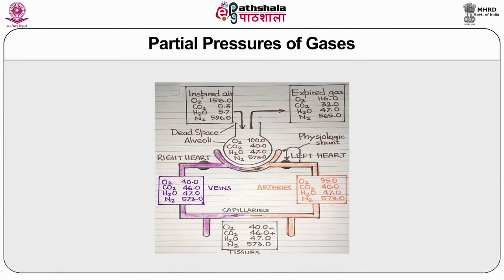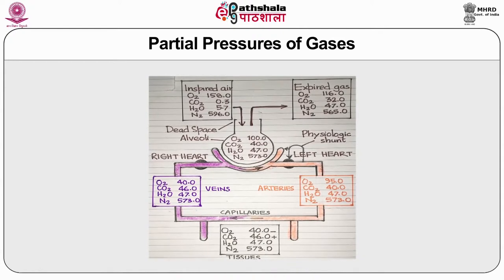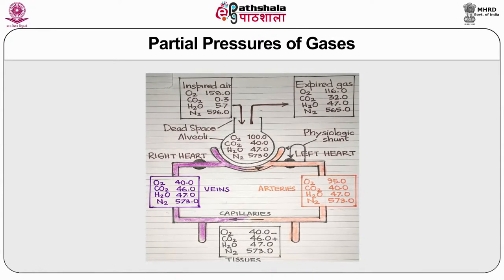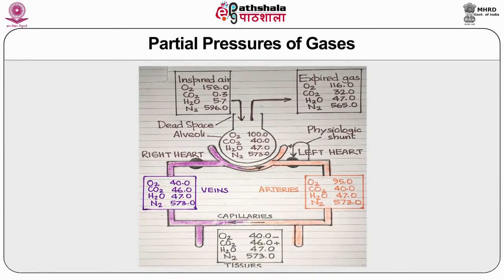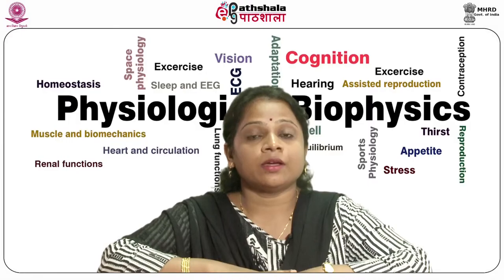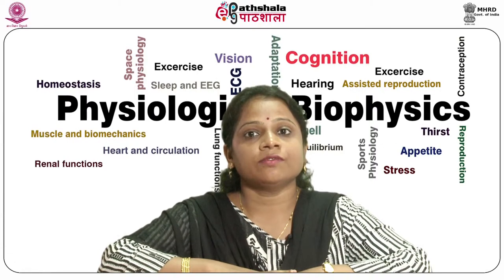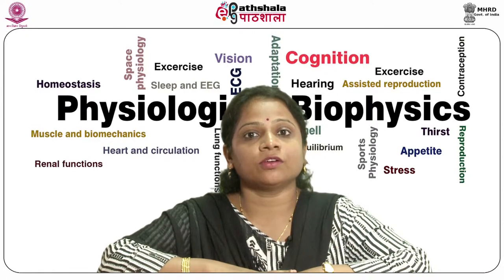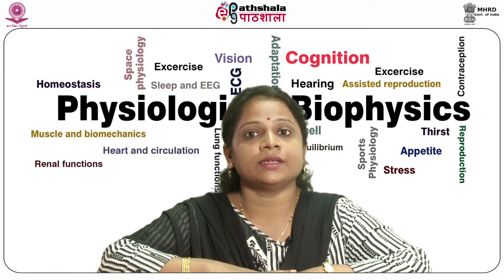When a mixture of gases comes in contact with a liquid and equilibrates with it, each gas dissolves in the liquid to an extent determined by its partial pressure and its solubility in the fluid. In the steady state, inspired air mixes with alveolar gas, replacing oxygen that has entered the blood and diluting the CO2 that has entered the alveoli. The O2 content of alveolar gas falls and its CO2 content rises until the next inspiration. Because alveolar volume is about 2 liters at end-expiration (functional residual capacity), each 350 ml increment of inspired and expired air has relatively little effect on partial pressures of O2 and CO2, so alveolar gas composition remains remarkably constant.